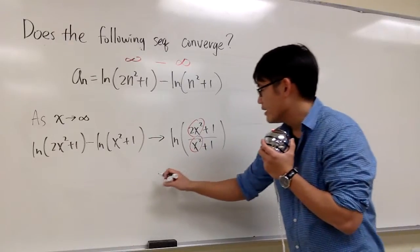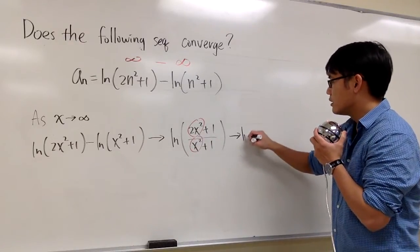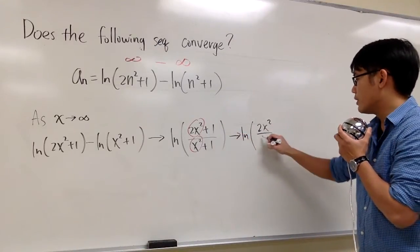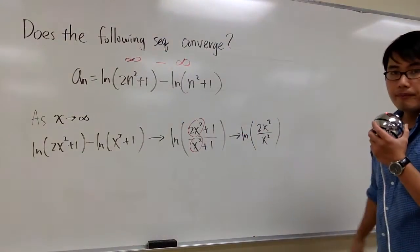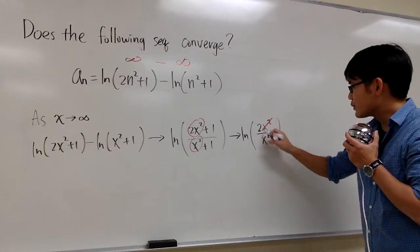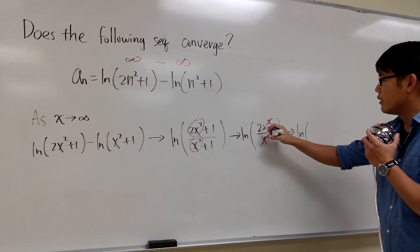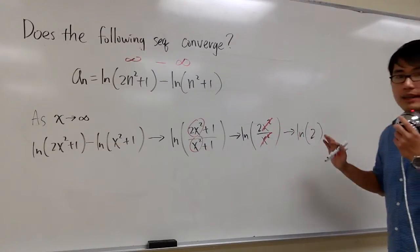And we can say, this right here will approach to ln(2x²/x²). And we see that x squared, x squared cancel. So, now what? This right here approaches to ln(2). And that's it.